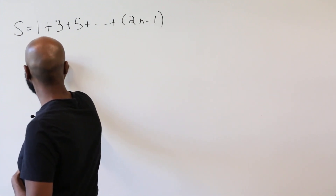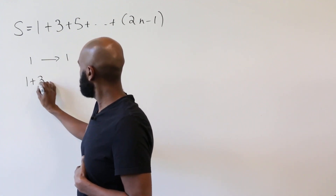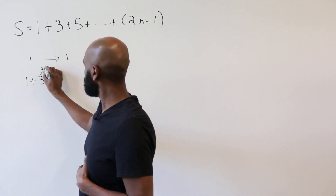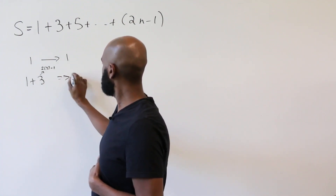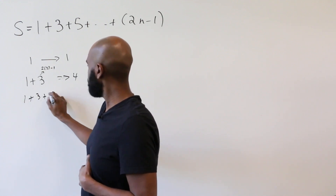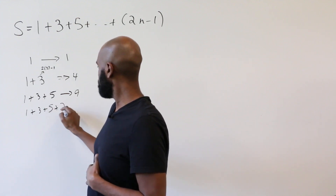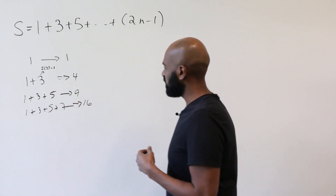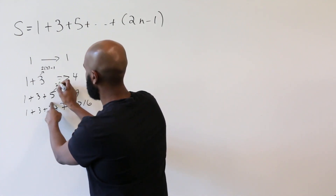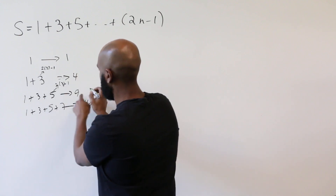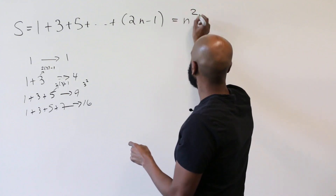Let's start with some small values. If n is one, we get one. If n is two, we get one plus three, which is four. Then one plus three plus five is nine. One plus three plus five plus seven is sixteen. We're getting squares of numbers — two squared, three squared, etc. So it looks like the sum of the first n odd integers ends up being n squared.